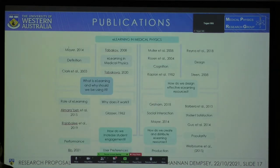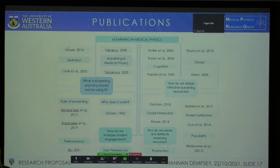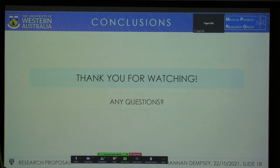This is a summary of my literature review, where I ask the questions: What is e-learning and why should we be using it? How do we design effective e-learning resources? How do we increase student engagement? And how do we distribute e-learning resources? The following articles explain different theories that fall into each category and were able to help me in my research for creating e-learning materials. Thank you for watching — does anyone have any questions?